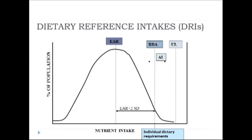It is safe to consume nutrients anywhere between the RDA and all the way up to the UL — the risk of toxicity is minimal. The moment we cross the UL, the risk of toxicity increases, and that risk increases exponentially the more the UL is exceeded.